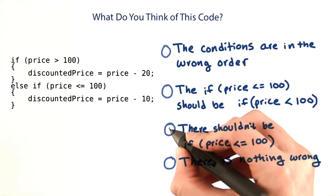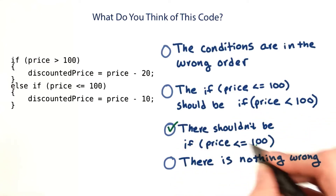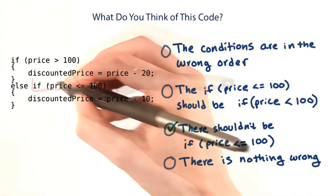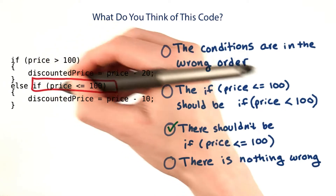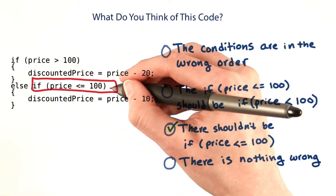The answer is, there shouldn't be an if price is less than or equal to 100 condition. This condition doesn't change the execution, but it adds unnecessary code and opportunities for bugs.